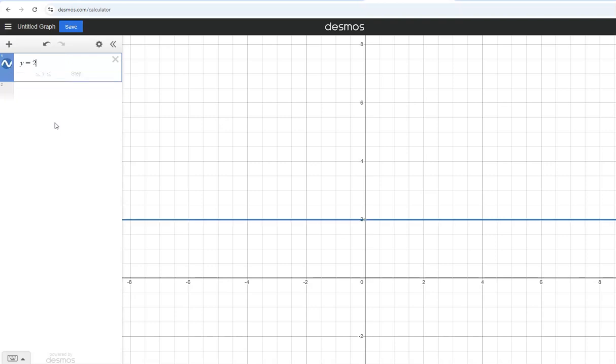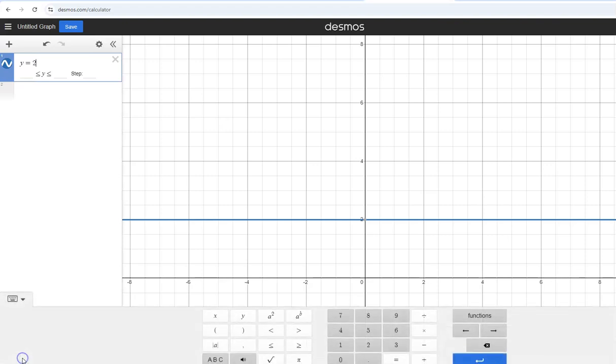Or another way to get up to the exponent is to use the keyboard here that's on Desmos. So if I click on this keyboard down here near the bottom, then I can click the A to the B button, and now I'm up in the exponent. I still have to put parentheses around it. So I forget what I typed in, so I'll just say x minus 3.